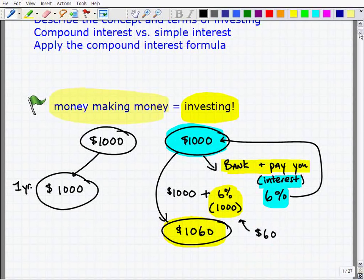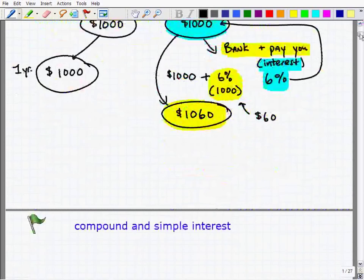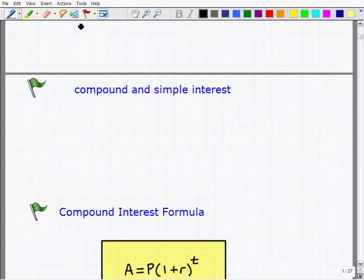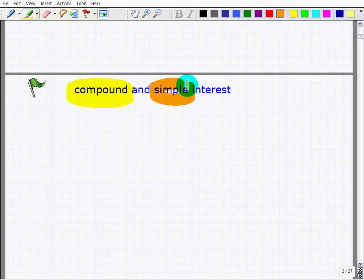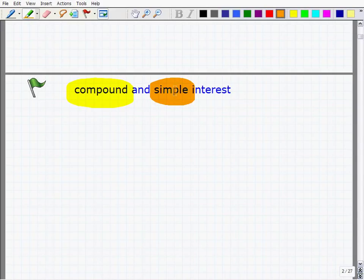Let's take a look at the two most common types of interest situations: compound and simple interest. I want you to understand right now that compound interest makes money grow a lot faster than simple interest. So when given the choice, you always want to go with the compound interest account.